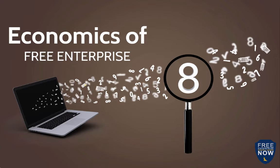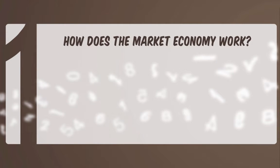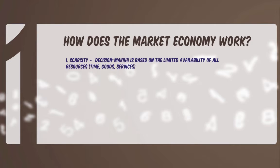So we ask the basic question: how does the market economy work? First, goods and services are exchanged based on the voluntary decisions of individuals pursuing their unique desires. Three features of our world govern this exchange process. The first is scarcity — decision-making is based on the limited availability of all resources, including our time and goods and services.